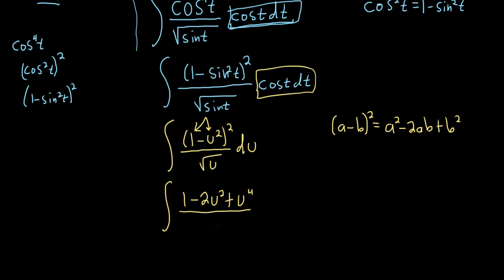On the bottom, we have the square root, and we still have to break things up. So it's a good idea to write it as u to the 1 half, and then we have our du.